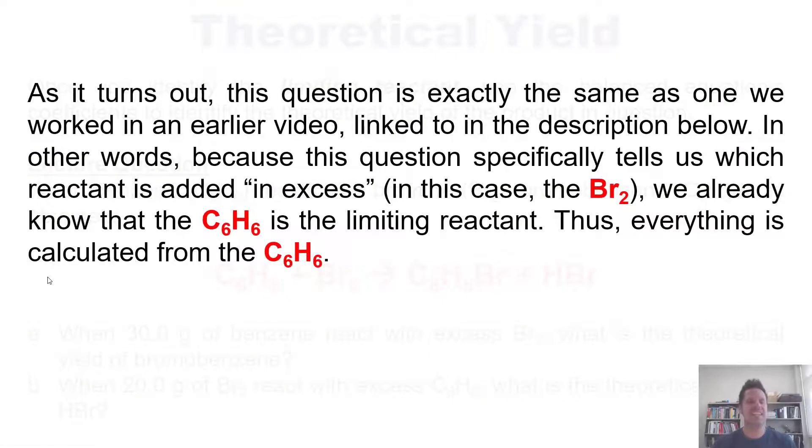Now, as it turns out, this question is actually exactly the same as one we worked in an earlier video, which is linked to in the description below. In other words, because this question specifically tells us which reactant is added in excess, in this case the Br2, then we don't have to go through any of BICPA. You see, we already know that the C6H6 benzene is the limiting reactant. See, the question told us that the Br2 is added in excess. So by default, the other reactant, in this case C6H6, is the limiting reactant.